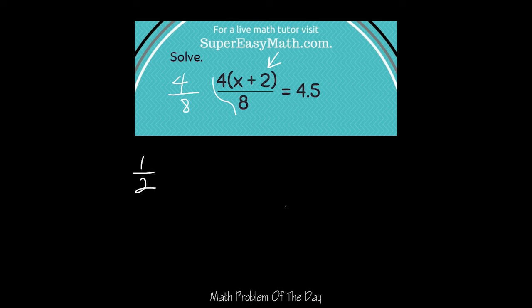So now I'm going to rewrite this problem, but instead of writing the 4 and the 8, I'm going to write the 1 and the 2. So it's 1 times x plus 2 over 2 and that equals 4.5.